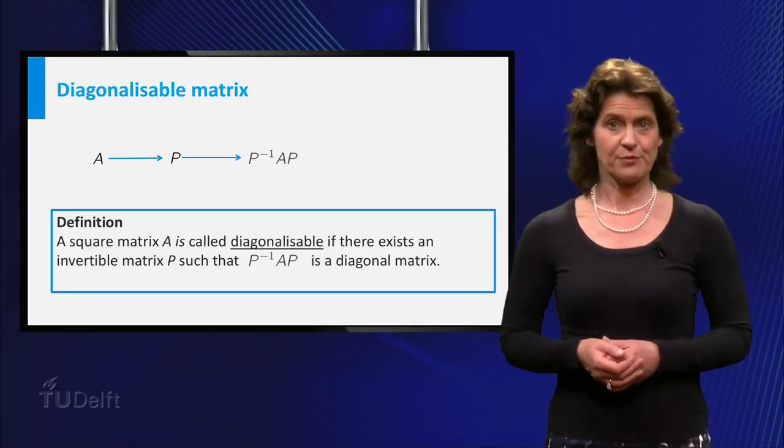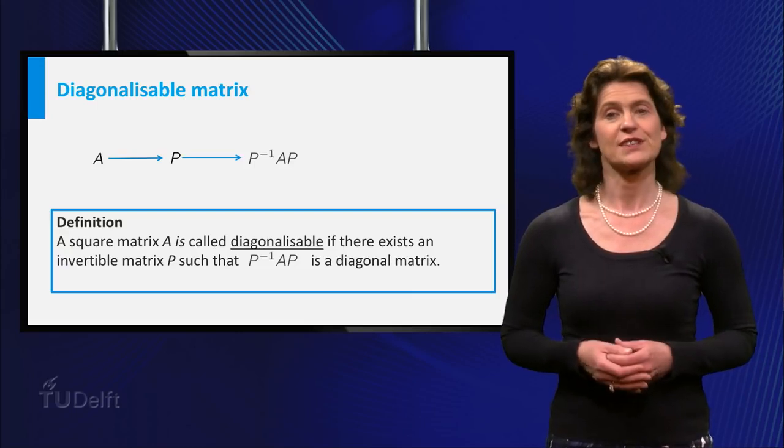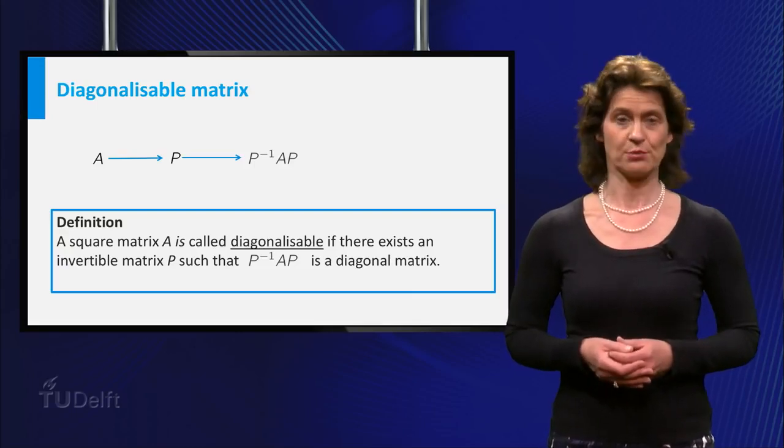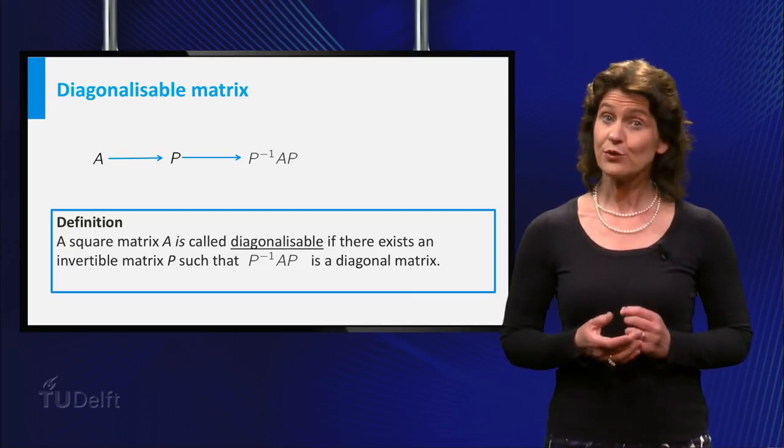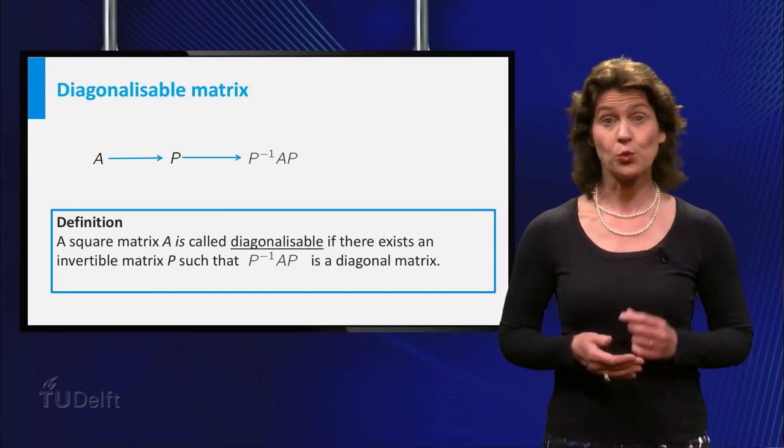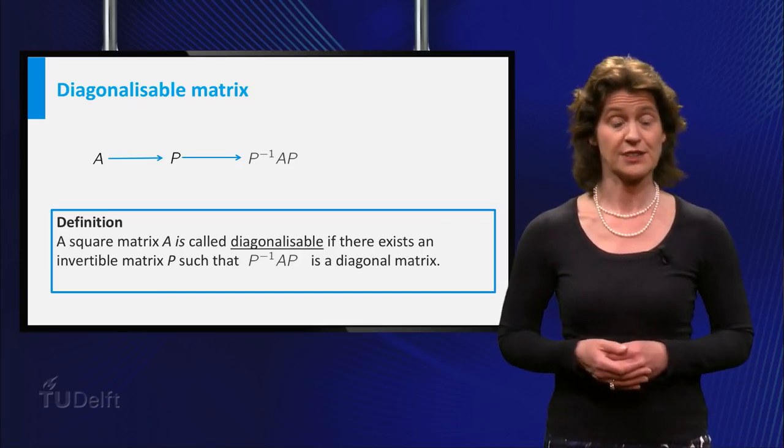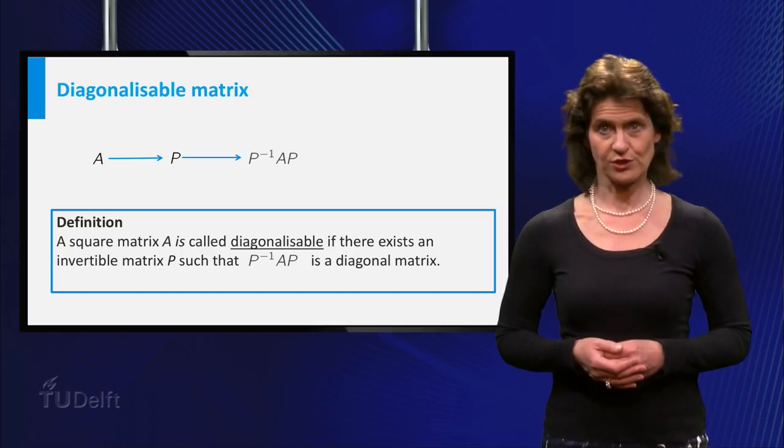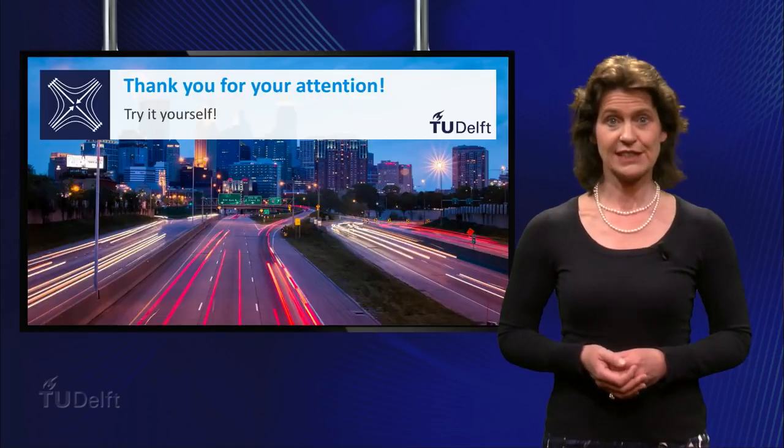A matrix A for which you can find such a matrix P is called diagonalizable. You really have to come to class if you want to find out which matrices are diagonalizable and how you can construct the matrix P. See you there!